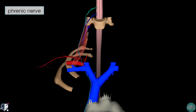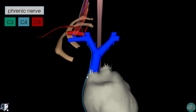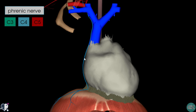The phrenic nerve arises from the anterior rami of nerve roots C3 to C5. On this model we've got the right phrenic nerve, which originates from C3, C4 and C5. It passes around the lateral aspect of the anterior scalene muscle, then winds anteriorly and passes between the subclavian artery and the subclavian vein. It enters into the thorax via the superior thoracic aperture, descending anteriorly to the right lung root and down the side of the pericardium to reach its destination at the diaphragm. The right phrenic nerve innervates the right hemidiaphragm and the left phrenic nerve innervates the left hemidiaphragm.